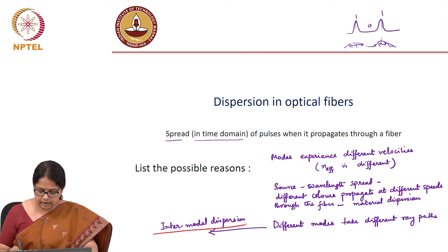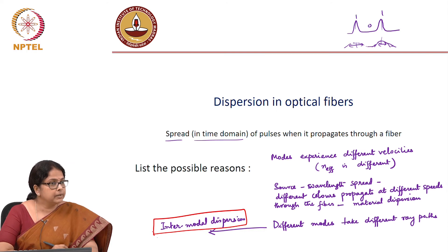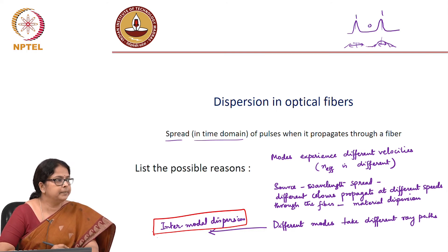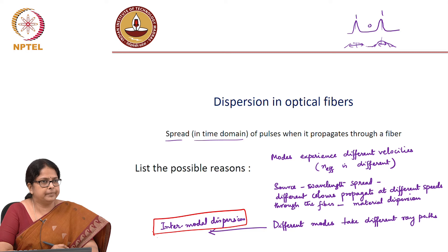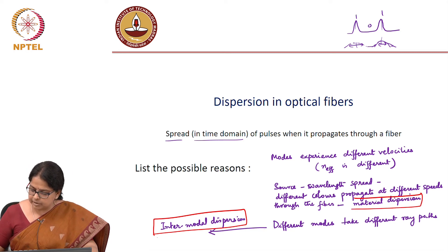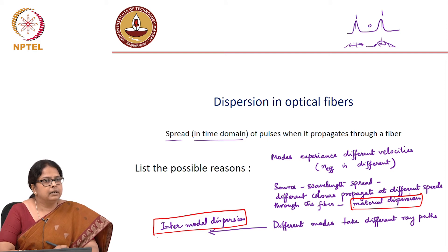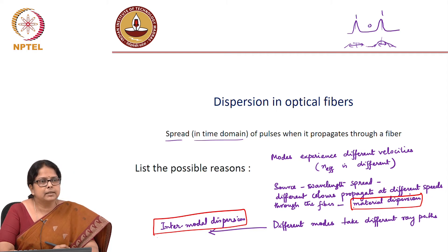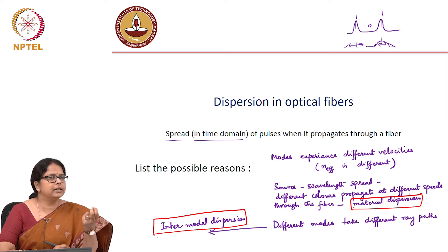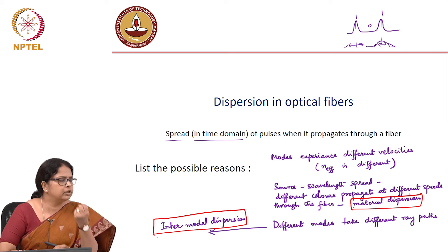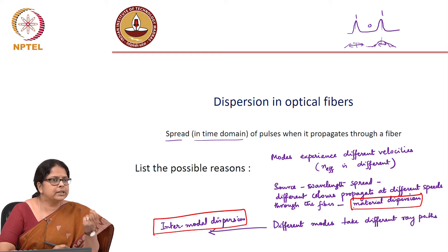Intermodal dispersion happens whenever you have multiple modes in the system, which means it does not happen in a single mode fiber. Then you have material dispersion - does it happen in single mode fibers? Yes. Does it happen in multimode fibers? Yes, because it has nothing to do with whether the fiber is single mode or multimode; it has to do with the fact that the source has a spectral spread.